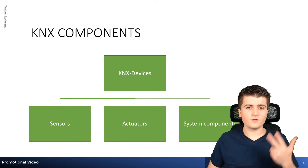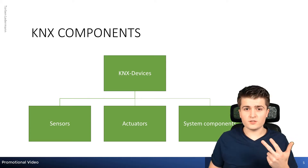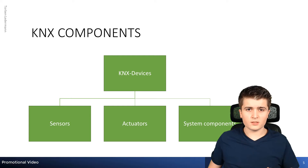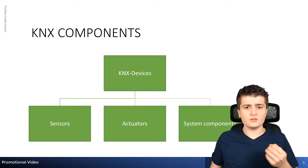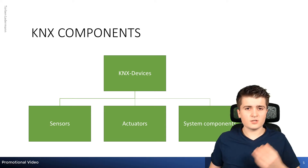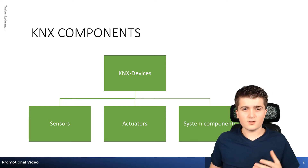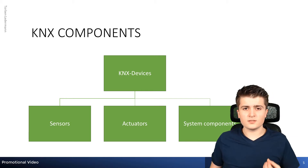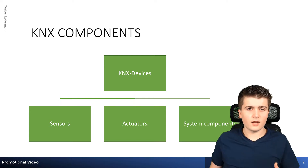KNX components can be divided into three larger groups. First of all there are the sensors, which convert physical information — like switching a push button or measuring temperature — into digital KNX telegrams. The complete opposite of a sensor are the actuators, which perform actions by converting the digital KNX telegram into a physical action like switching or dimming the light.